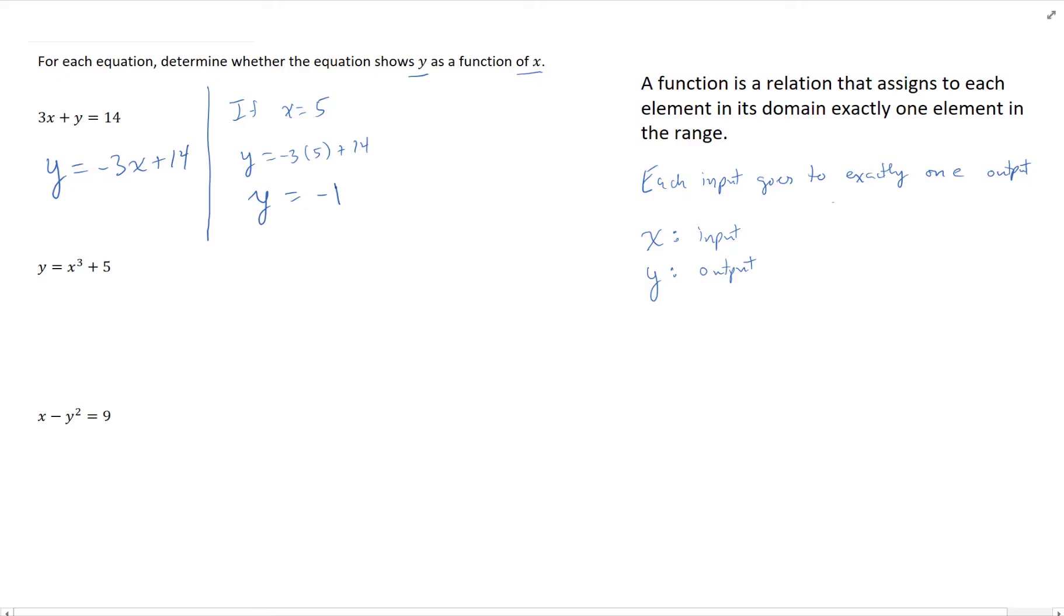That's the only value y could equal. There's no other possible value for y if x = 5. We could choose another x value and do something similar. Whatever x we choose, we get exactly one y value. This is a function.